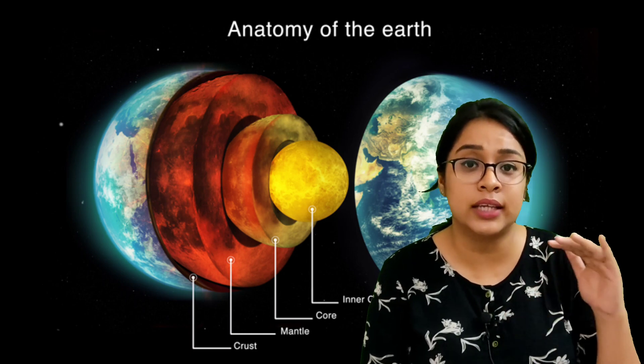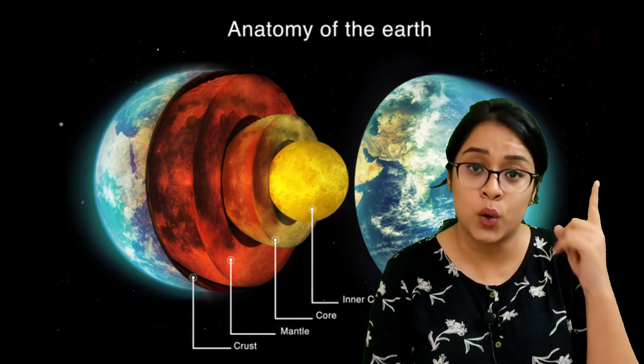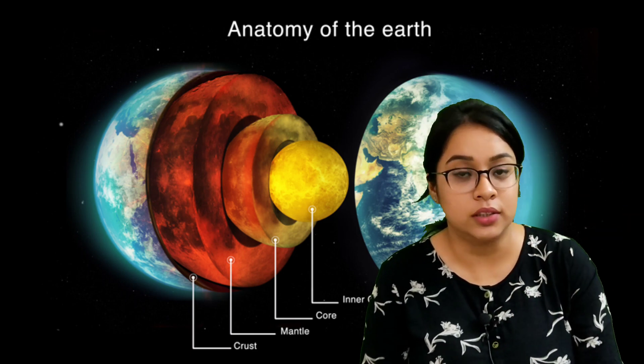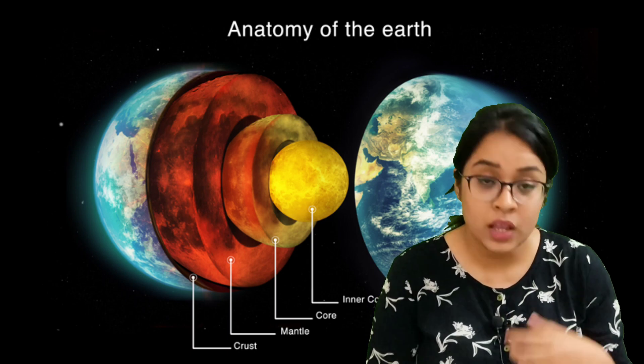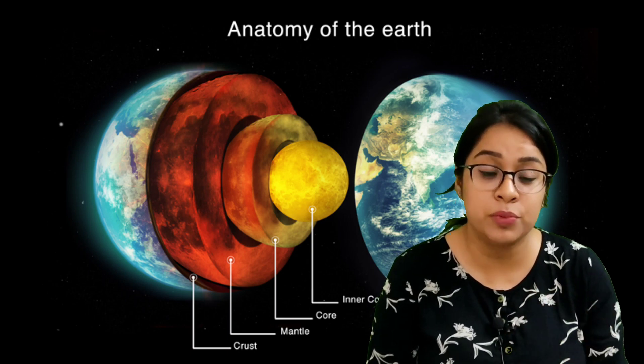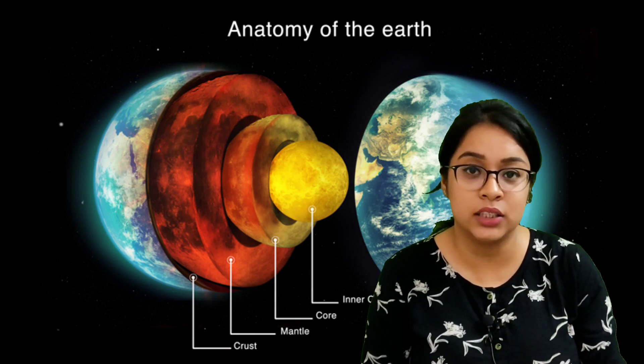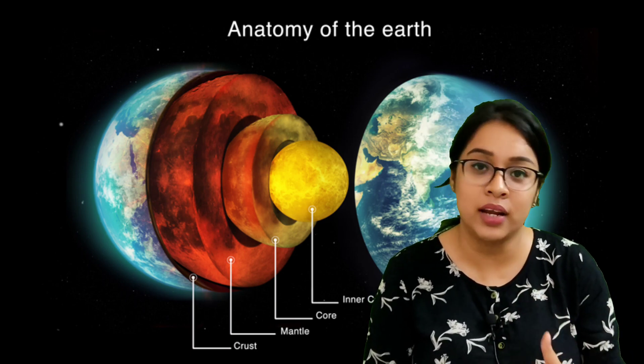The interior of the Earth can be divided into three parts: core, mantle and crust. The innermost part of the Earth is known as core. It is subjected to extreme temperature and pressure. Again, this core can be divided into two parts, outer core and inner core.